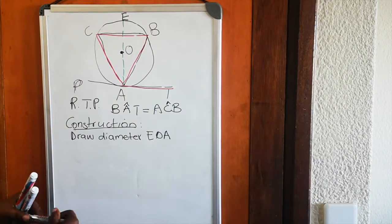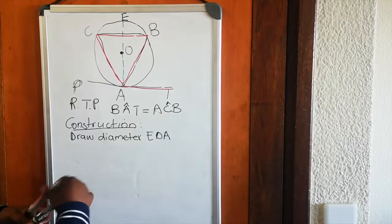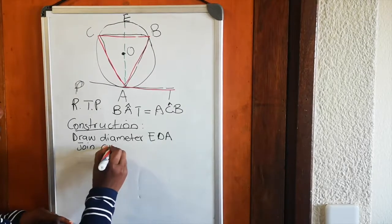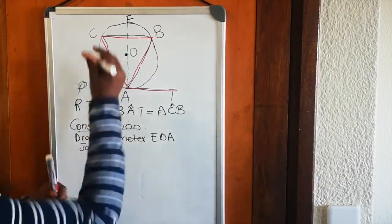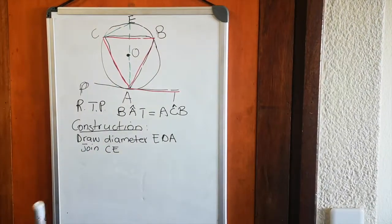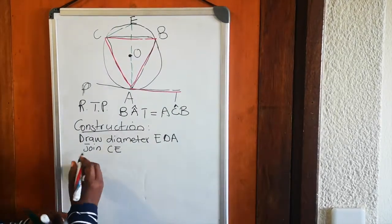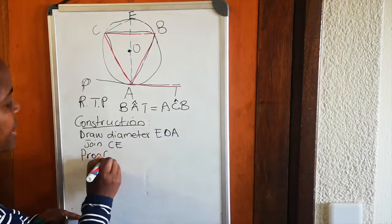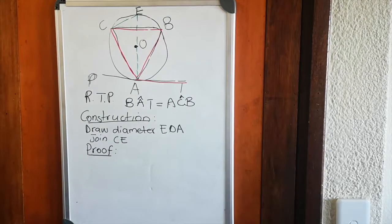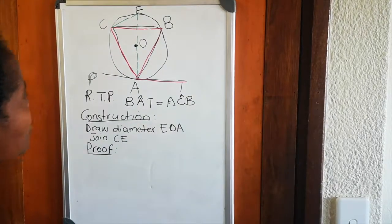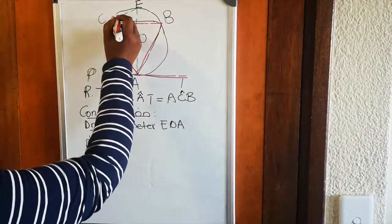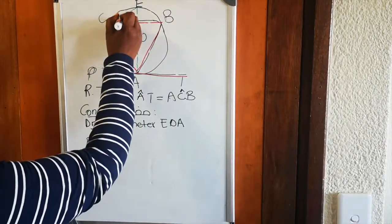Our next construction is to join C-E. We are now ready with our construction and ready to do the proof. We said we have three theorems — three conjectures — to prove this theorem. The first one is the angle in the semi-circle. Because we have a diameter here, this angle is 90 degrees.